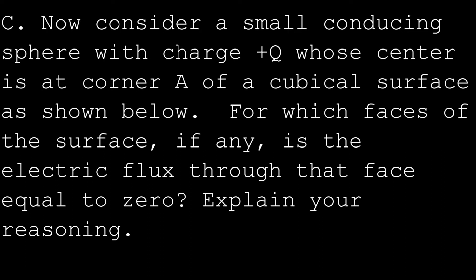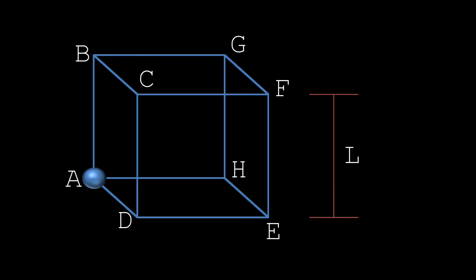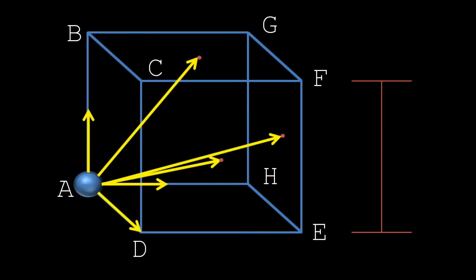Part C asks us to consider a small conducting sphere with charge positive Q whose center is at corner A of a cubical surface. For which faces, if any, is the electric flux through that face equal to zero? We draw our cube with vertices A, B, C, D, E, F, G, H, with the sphere located at point A. Any surface that is parallel to the electric field at zero degrees will have no flux through it, because the charge cannot pass through a parallel structure.